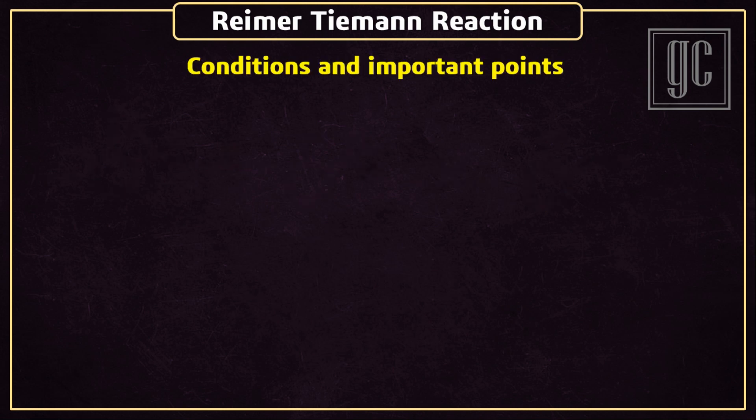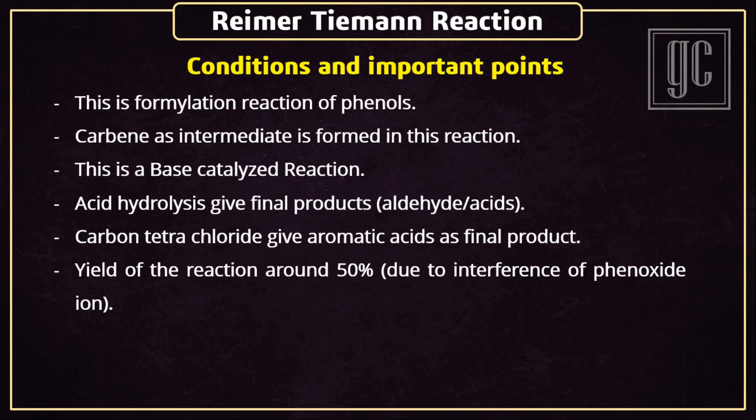The key conditions and important points for this reaction: this is a formylation reaction of phenols; carbene is formed as an intermediate; this is a base-catalyzed reaction; acid hydrolysis gives the final products; carbon tetrachloride gives aromatic acids as the final product; and the yield of the reaction is around 50% due to interference of the phenoxide ion.